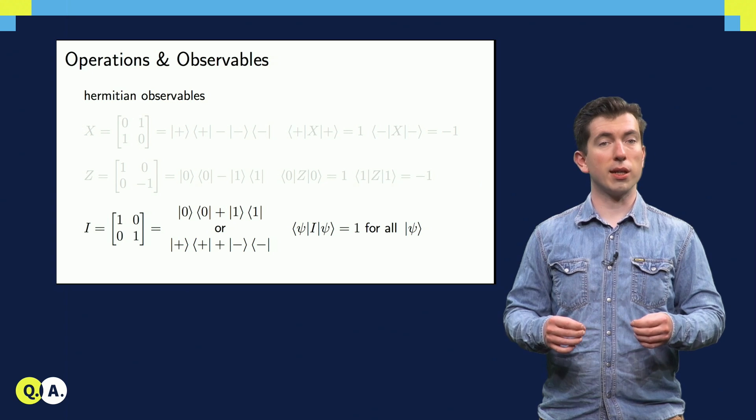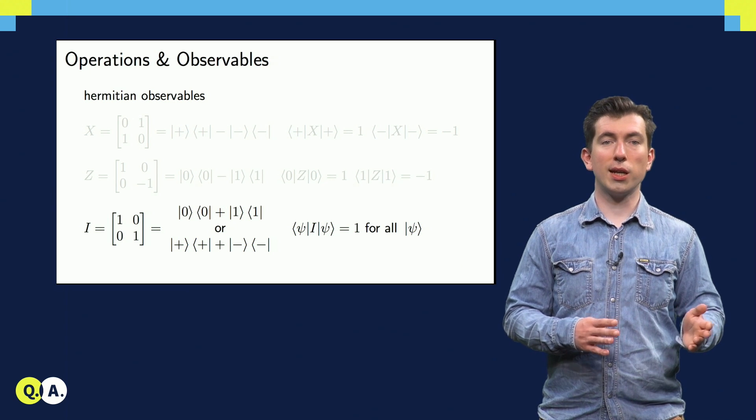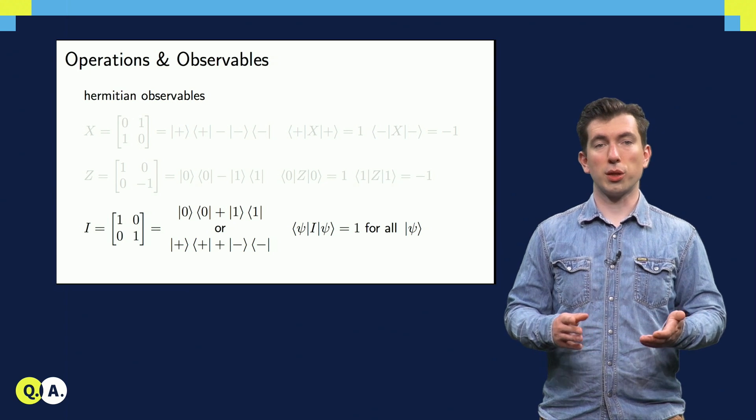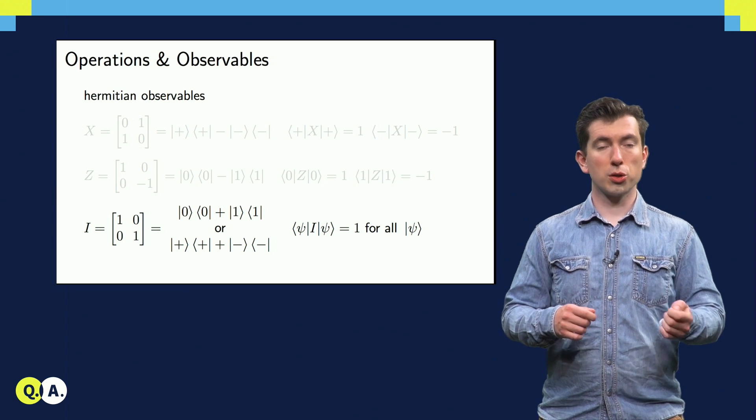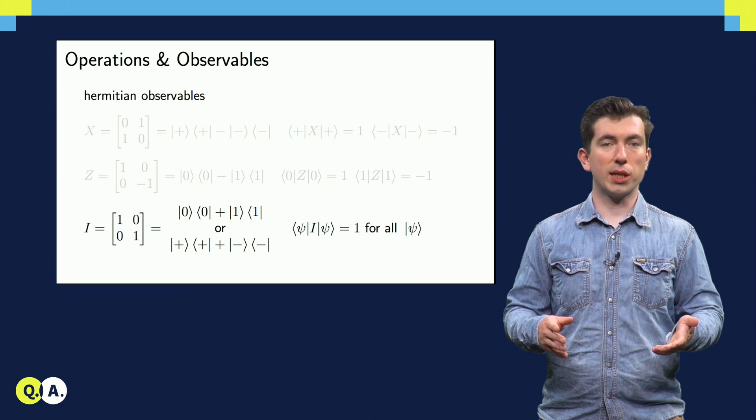And finally we have the identity, which is also unitary and Hermitian. We can note that the identity doesn't change the basis at all, so that indeed it can be expressed in any basis. Also, when used as a measurement operator, it always returns 1, no matter what state is input.